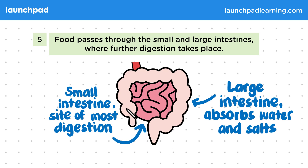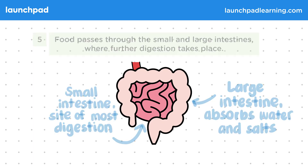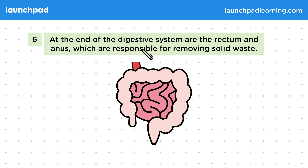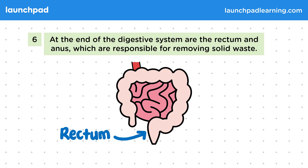By the time that food has moved through the large intestine, it's almost at the end of the digestive system. At the end are the rectum and anus, which are responsible for removing solid waste. The rectum is where waste is stored, and just below it is the anus, where waste is eventually excreted when a person goes to the bathroom.